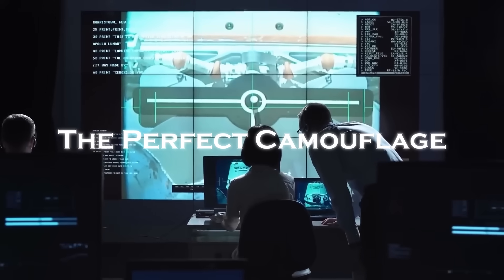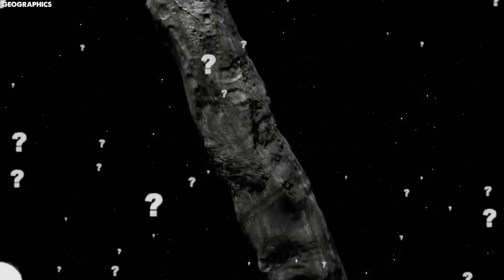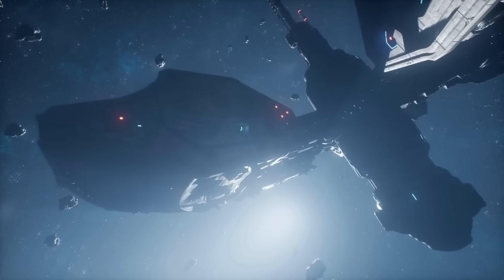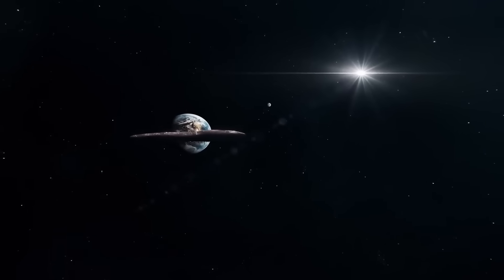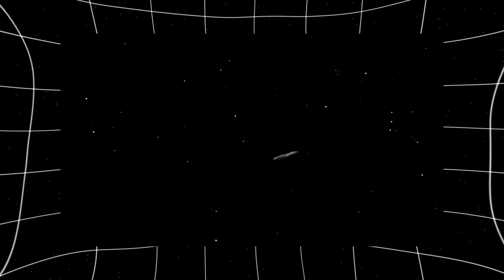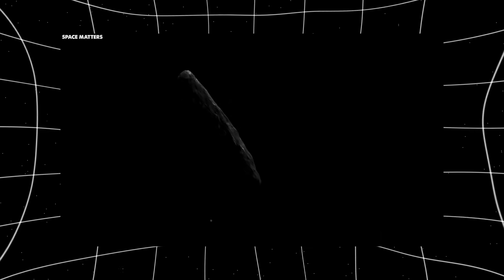If 3i Atlas truly is a machine, then its disguise could not be more clever. A comet is the perfect camouflage in space. Encased in ice and dust, it can protect whatever lies within from radiation and micrometeorites while appearing entirely natural to outside observers. As it nears the sun, the sublimating ice creates a bright coma and a tail of gas, hiding the nucleus from detailed study and masking any heat or electromagnetic emissions that might betray an artificial origin. NASA itself has studied ice shielding for human missions beyond Earth, proving the concept is both feasible and effective.